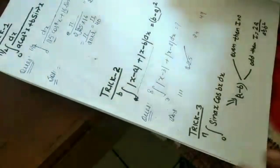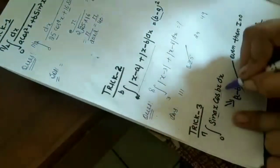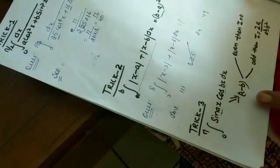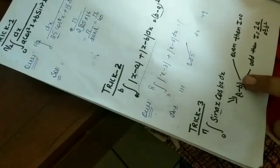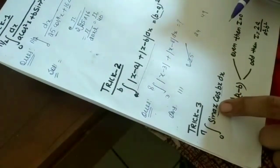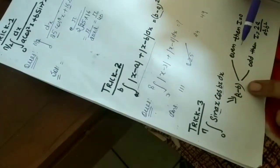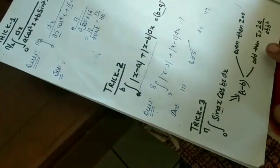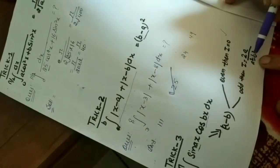Trick number 3. Integration of the function sin ax cos bx, limit from 0 to pi. First check a minus b value. If a minus b is even, then integration answer is directly 0. If a minus b is odd, then integration formula is 2a over a square minus b square.